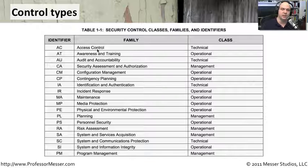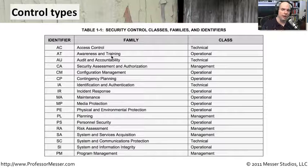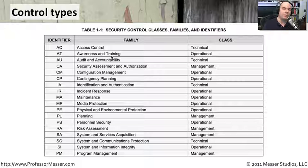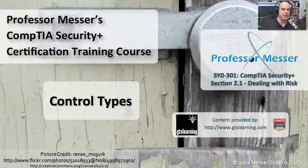Technical — yes, that's access control, configuring firewalls, making sure your access control lists are set properly. Operationally, you want to have awareness and training. So make sure you're aware of the different families in these classes and understand what these control types are. If you have time, read through the document — it's a very nice and quite comprehensive overview of all these families and classes and how the federal government uses them to control and manage their security. You could probably take some of what they're doing and apply it to your own environment as well.